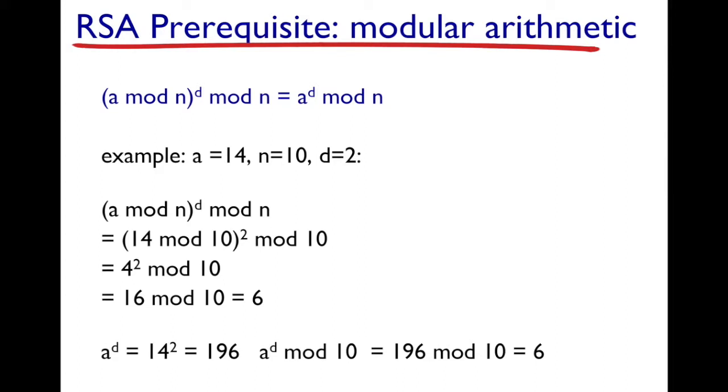Now (a mod n) to the power of d is the same as (14 mod 10) raised to 2, and then we have a mod n which is going to be mod 10. Now 14 mod 10 is 4. That is raised to the power of 2 which is 16, and then we take a mod of 10 which gives us the value of 6.